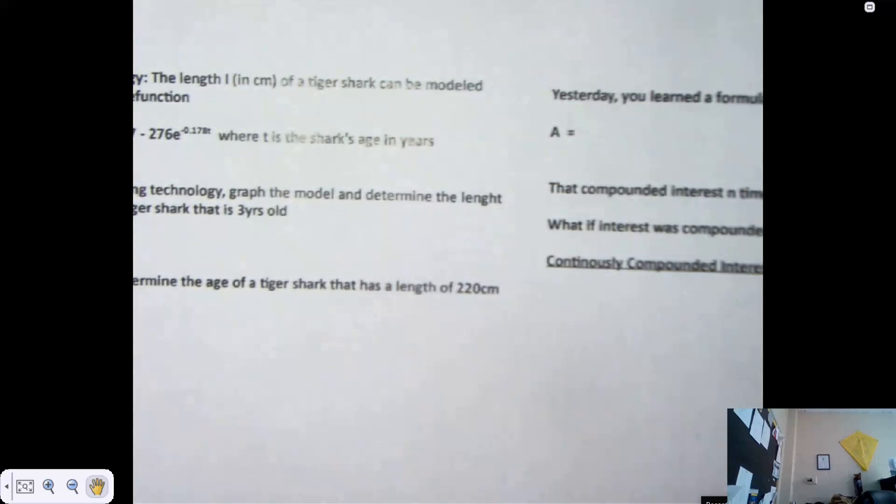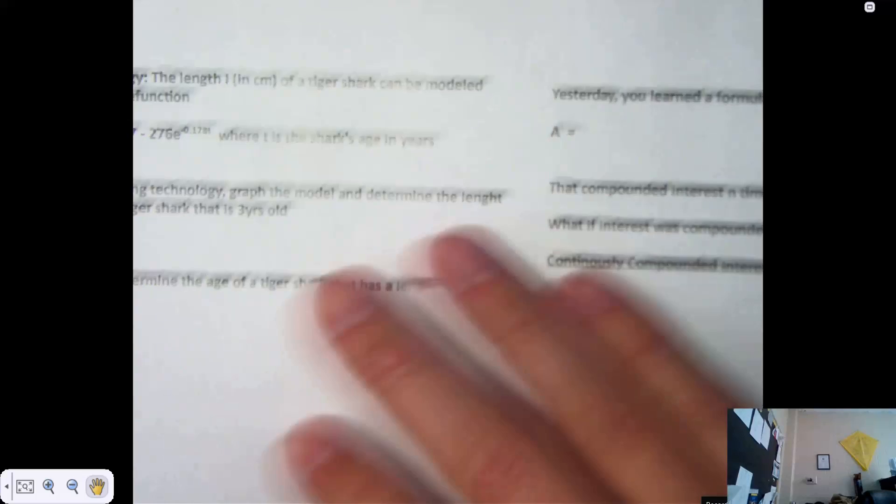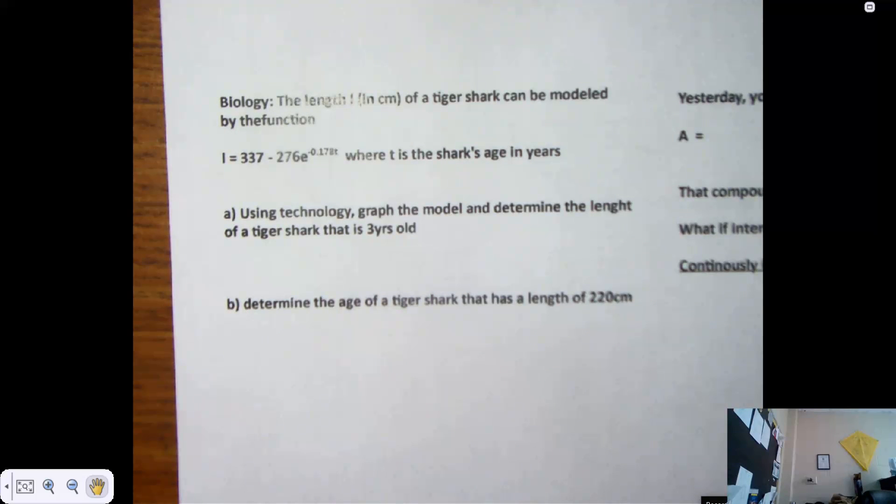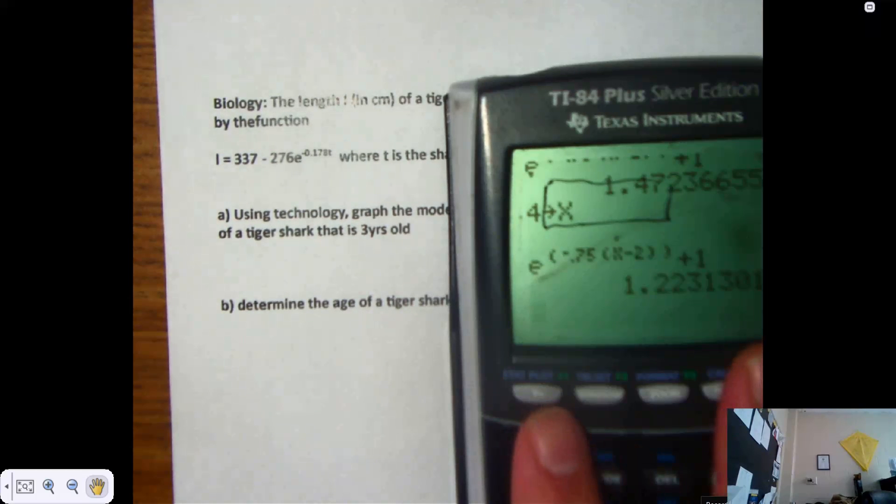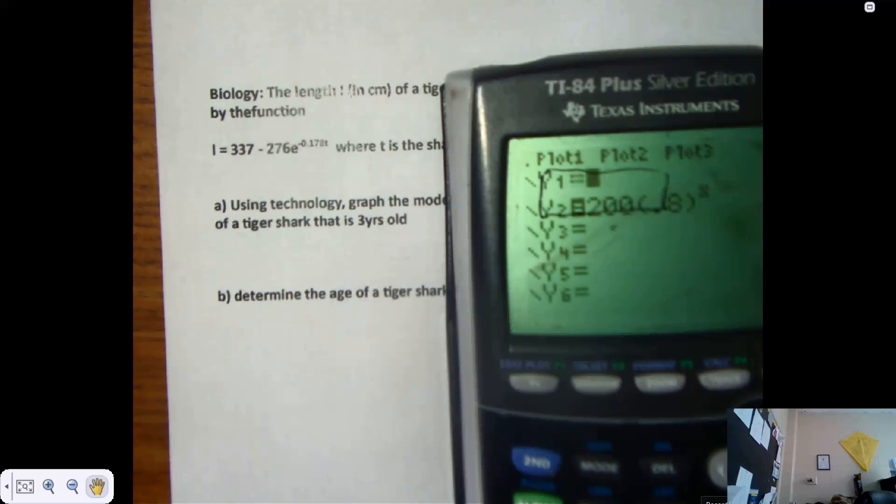Alright. Application here. One about biology. Then we'll talk about a new formula. Let's see. The length L in centimeters of a tiger shark can be modeled by the following function. Length is 337 minus 276 E to the negative 178 thousandths of T, where T is the shark's age in years. Part A is using technology, graph the model and determine the length of a tiger shark that is three years old. There's a reason I have this that says use technology. And to do with the graph, I wanted to show you something. So play along. We're not putting anything in. We're not putting three in Y1. L stands for what? Length. Not years.